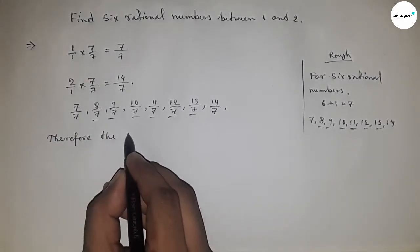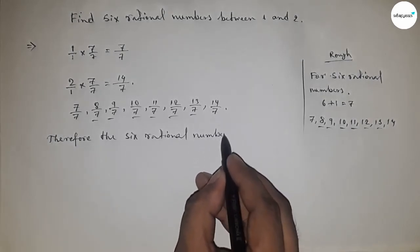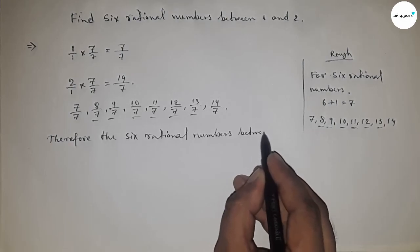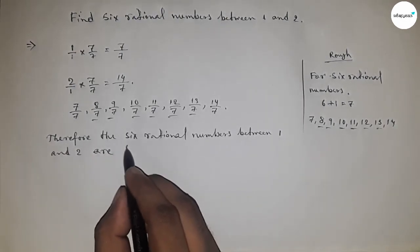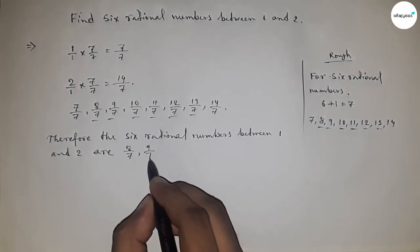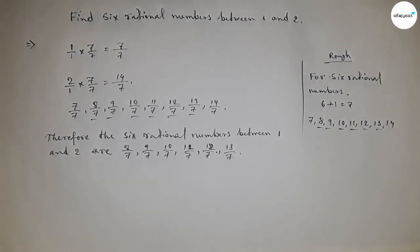Eight upon seven, nine upon seven, ten upon seven, eleven upon seven, dot dot, thirteen upon seven. This is the process to find out six rational numbers between one and two.